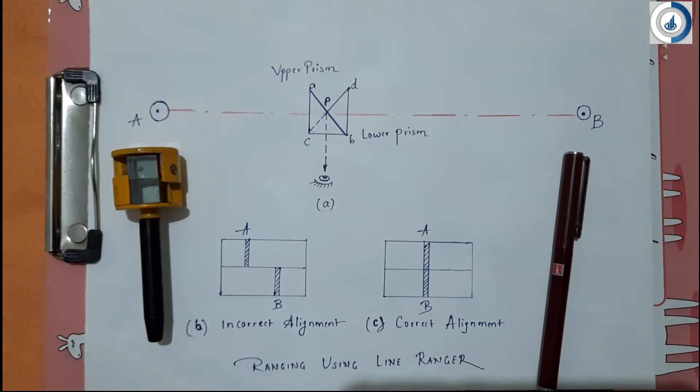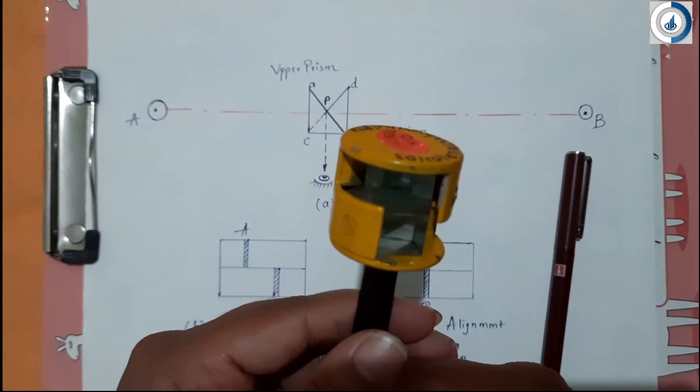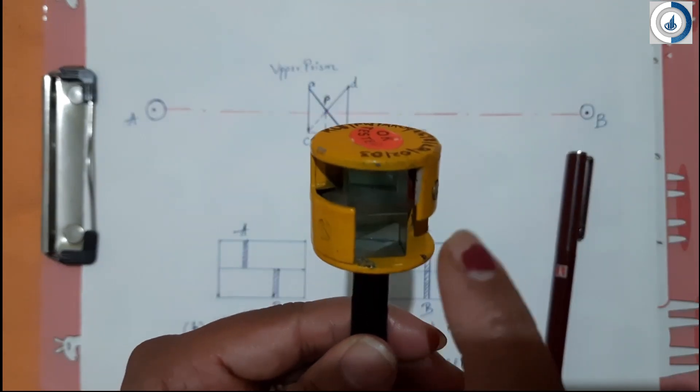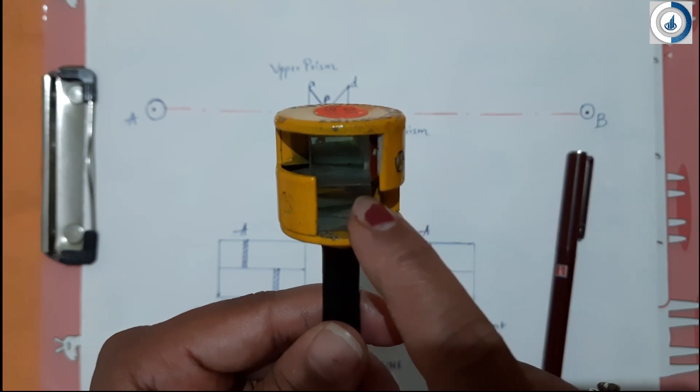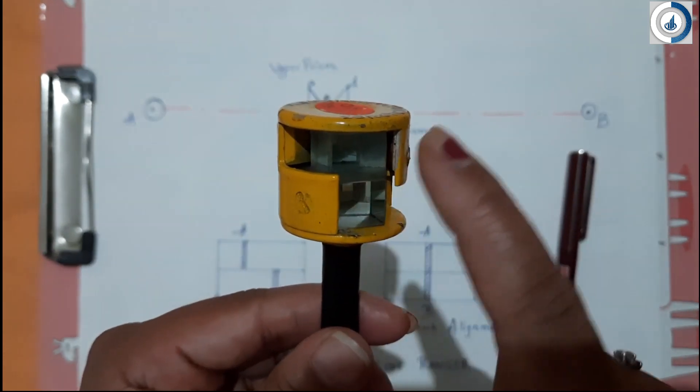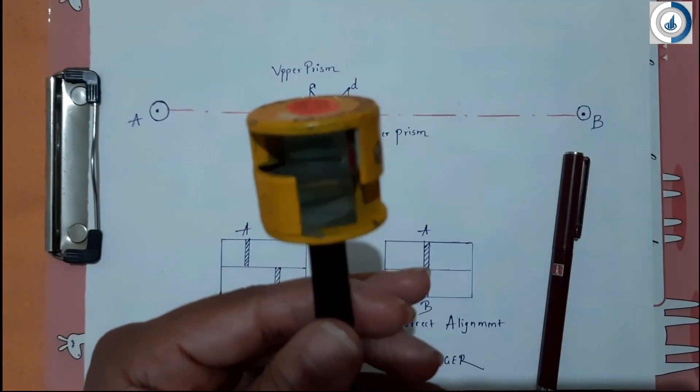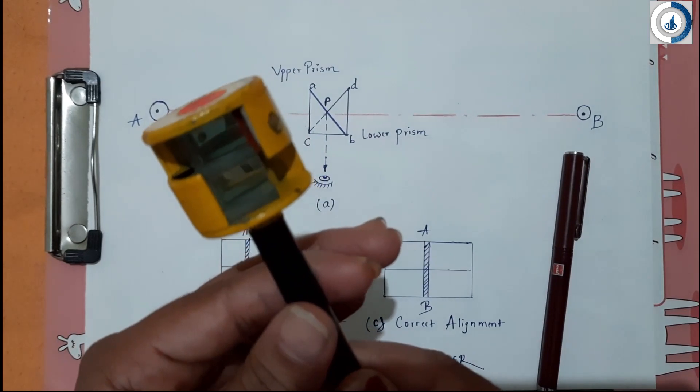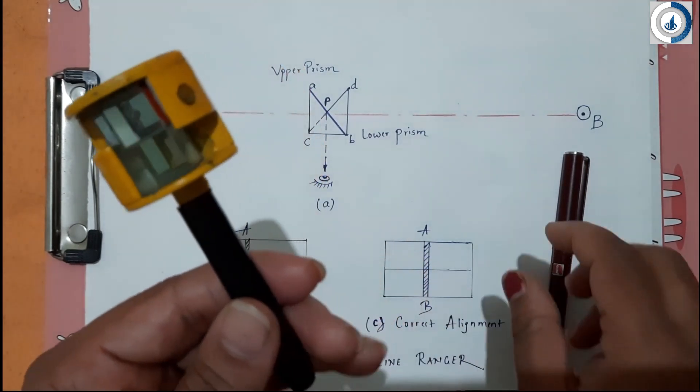Line ranger is an optical instrument used for locating intermediate points on a line. A line ranger consists of two right-angled isosceles prisms which are placed one above the other. The diagonals of these prisms are silvered to get the reflection rays. A handle is provided at the bottom to hold the instrument in hand.